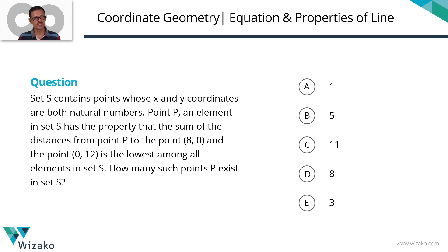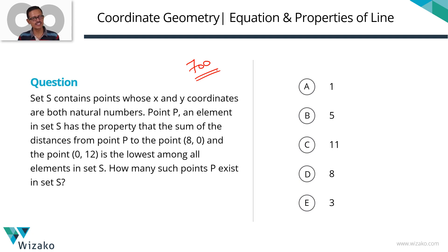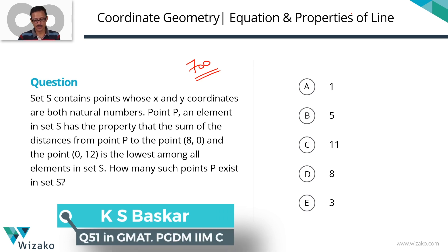This is a GMAT problem-solving practice question. I'll classify this as a 700-level question — quite interesting and difficult. It comes from the topic of coordinate geometry. The following concepts are tested: properties of lines, equations of lines, and a little bit of number properties. Let's get started.